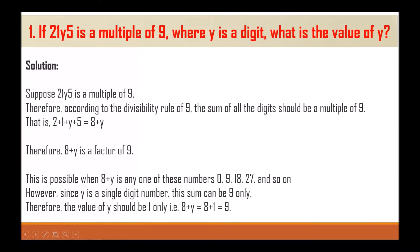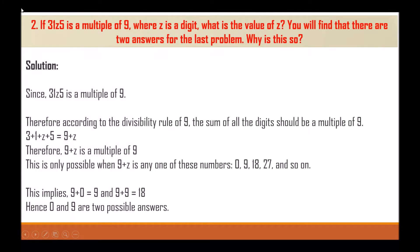Question 2: If 31z5 is a multiple of 9, where z is a digit, what is the value of z? You will find that there are two answers for this problem. Since 31z5 is a multiple of 9, according to the divisibility rule of 9, the sum of all the digits should be a multiple of 9. So 3 + 1 + z + 5 = 9 + z.